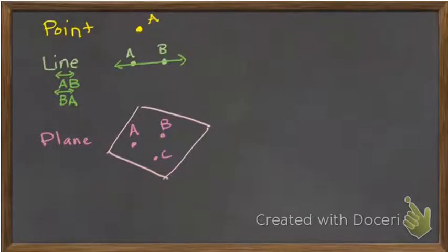So the way you label a plane is you just write those three points, and they usually just write plane A, B, C.